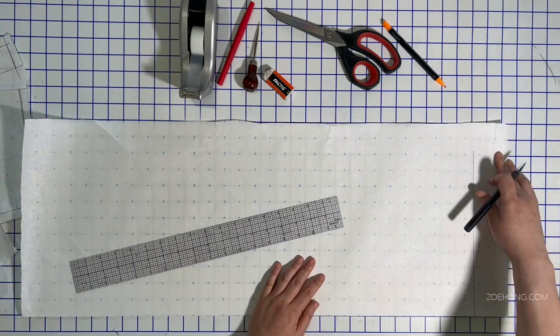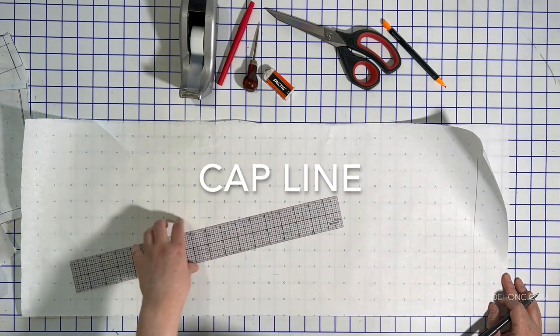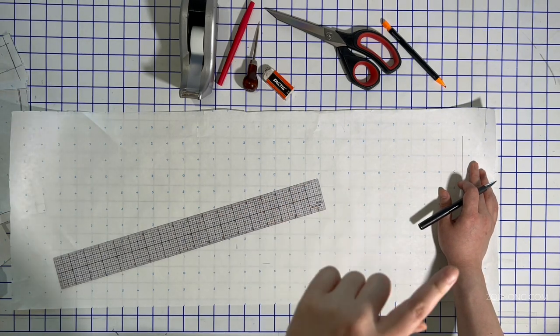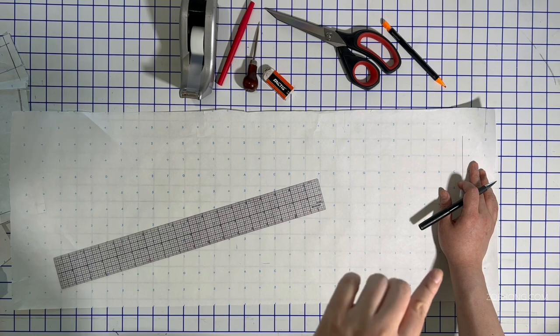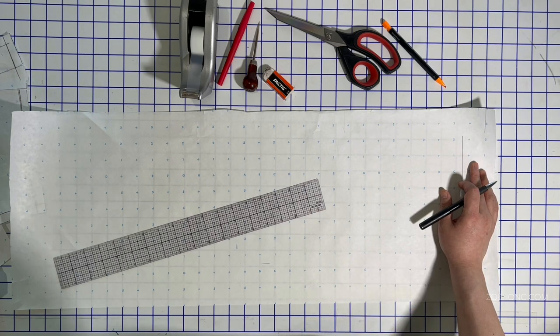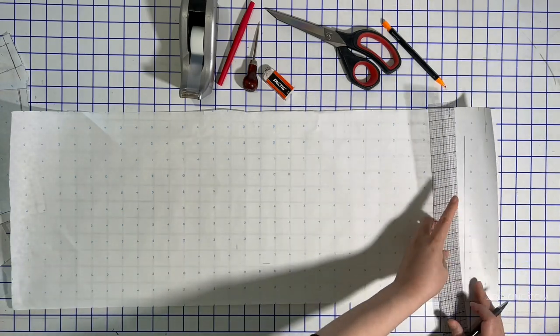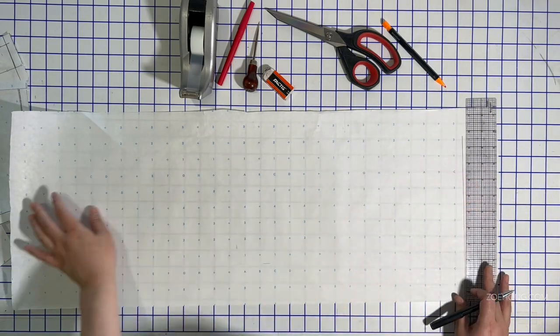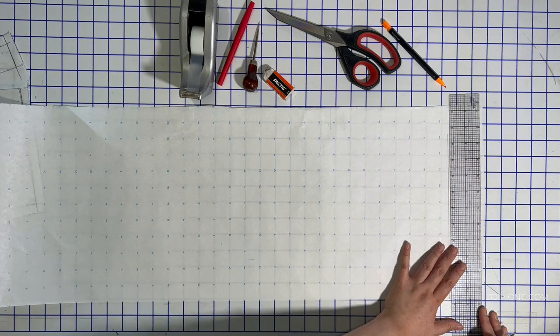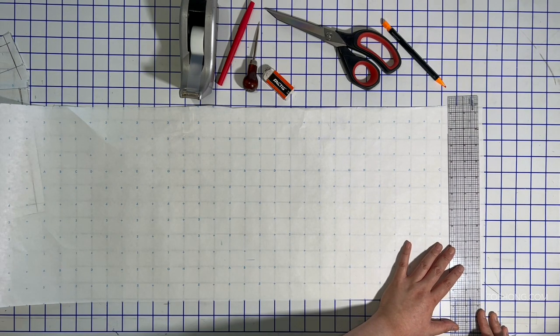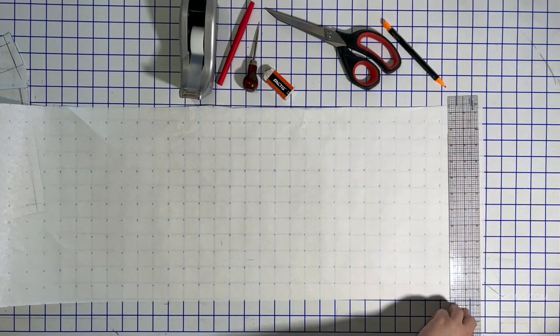Next, we're going to draw the cap line. The cap line is the very tippy top of your sleeve pattern, which is the point where it gets sewn into the bodice. And so two inches from the top of your paper, perfectly perpendicular, 90 degree angle from the fold, draw your line.